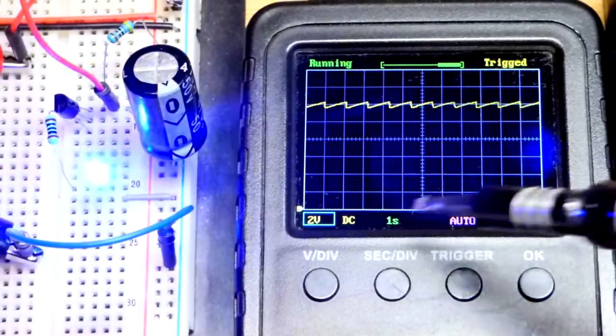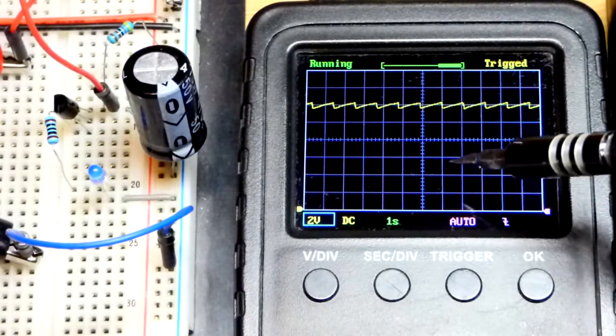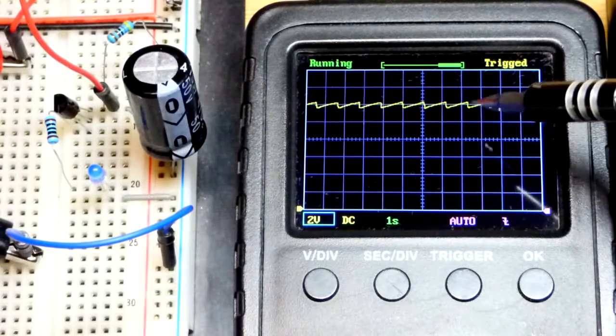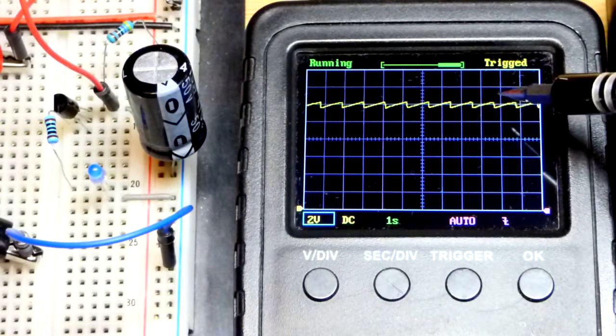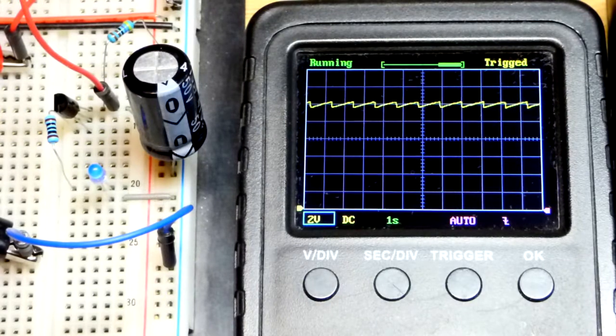But there you can see the voltage change. Not much. Each one of these squares is 2 volts. We're up 2, 4, 6, 8, 10. And that's 12 up there. So it's getting up to about 12 and down to, I guess, like 11 and a half or so.